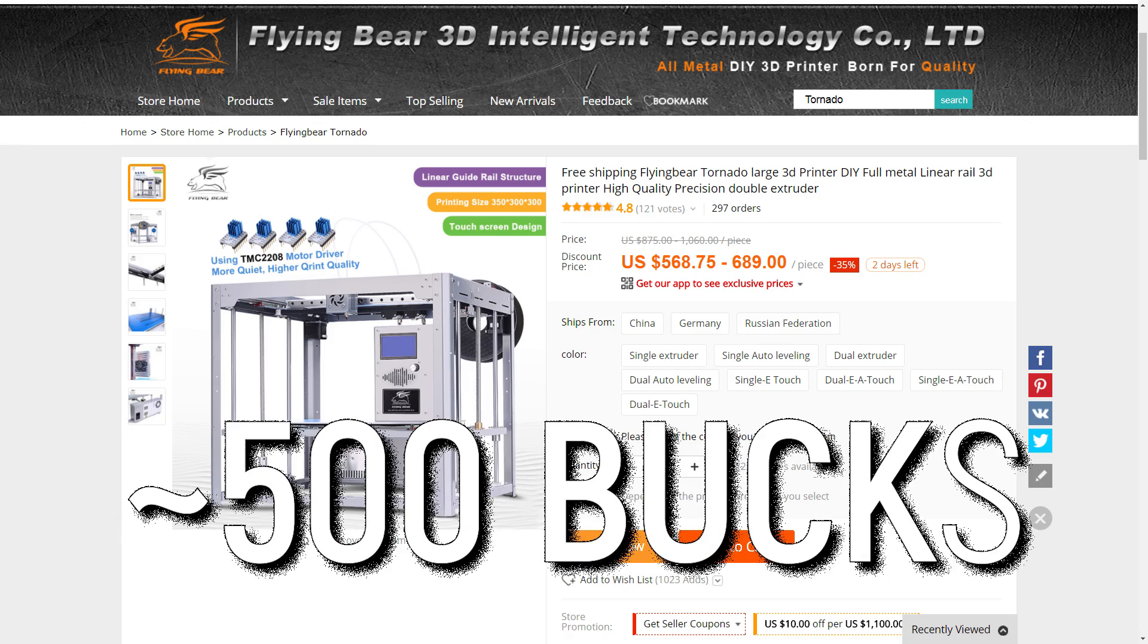This is the Flying Bear Tornado, a huge metal Core XY 3D printer kit with linear rails for $500. What could go wrong? How's it going guys? Angus here from Makers Muse coming at you with yet another 3D printer review.